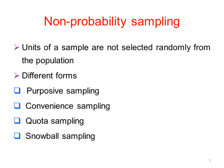Investigators select the samples. Non-probability sampling has four types: the first one is purposive sampling, second one is convenience sampling, third one is quota sampling, and the last one is snowball sampling.